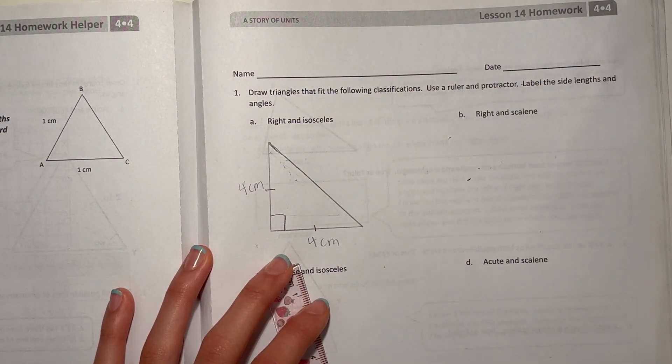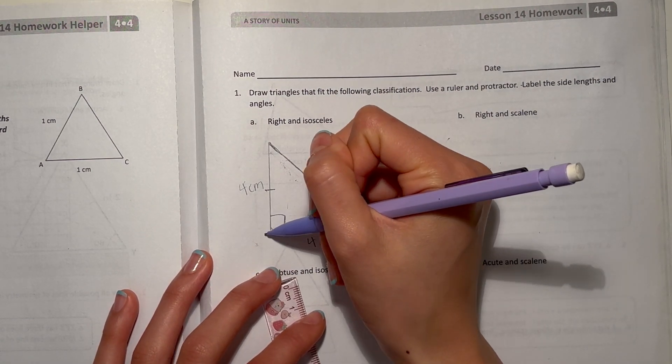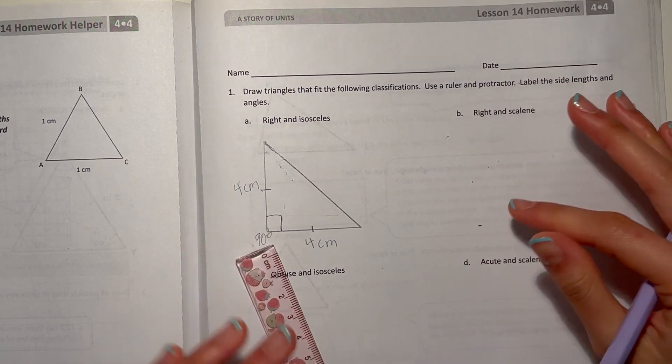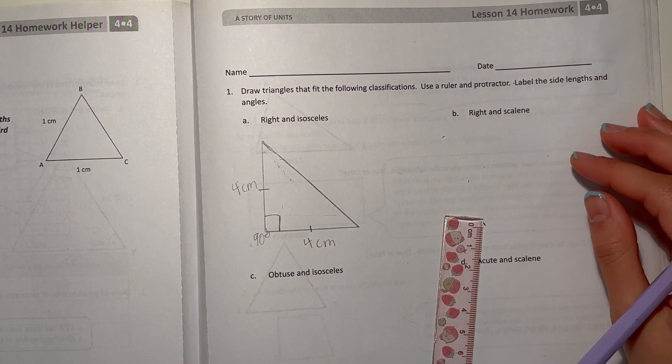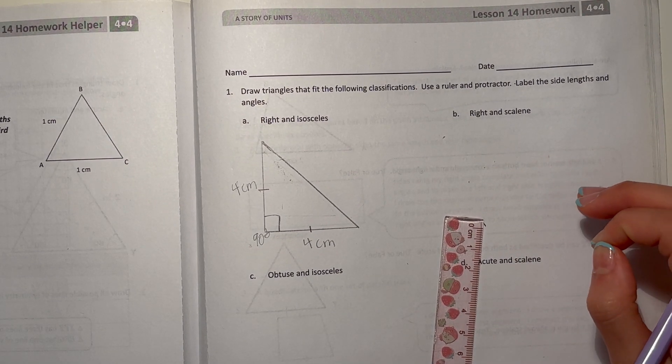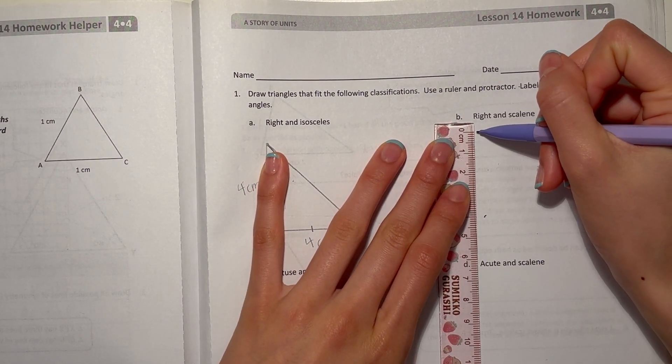This we drew four centimeters and also four centimeters, so they're equal. And our angle, the right angle, is 90 degrees. All right, for B: right and scalene. Scalene means all sides are different side lengths.